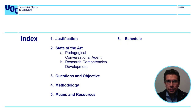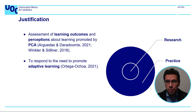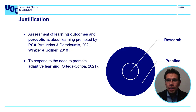You can see in this slide the index of the presentation. The questions that arise in the literature and require study are the assessment of learning outcomes and perceptions about learning promoted by PCA. The results are of interest in practice as they will allow responding to the need to promote adaptive learning. Scientific researchers suggest assessing learning outcomes and student perceptions in both general and particular ways.